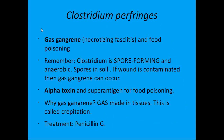Clostridium perfringens causes gas gangrene, also known as necrotizing fasciitis. The bacteria isn't literally eating your skin — it's releasing a toxin called alpha toxin. For example, after a car wreck you get a wound contaminated with soil containing spore-forming C. perfringens; the bacteria germinate and release alpha toxin, which degrades your tissues. It's called gas gangrene because the bacteria produce gas. The gas in the tissues is called crepitation — whenever you see crepitation, think gas gangrene. Treatment is penicillin.